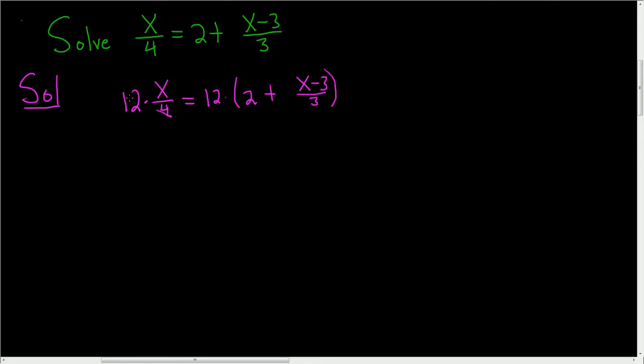So 4 goes into 12 three times, so we're left with 3x. On the right-hand side, we just have to carefully distribute.